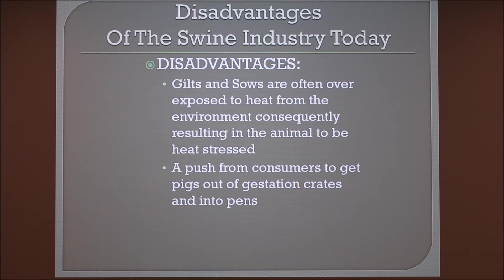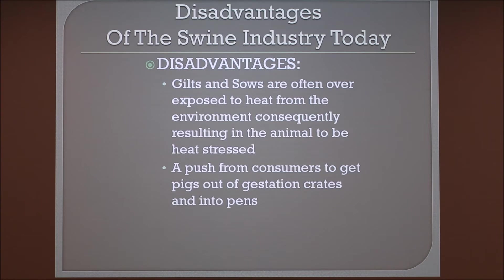However, there are some disadvantages of the swine industry today. One of the major ones is that gilts and sows are often exposed to heat from the environment, consequently resulting in the animal being heat stressed. If the animal is heat stressed, there's a lot more opportunity for the animal not to be able to reproductively be as efficient as she could optimally be.